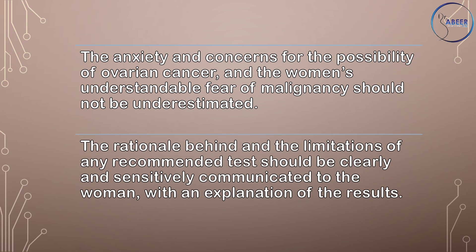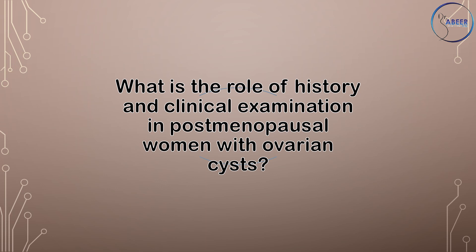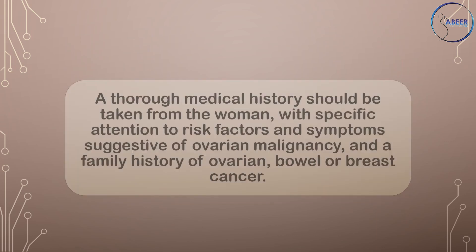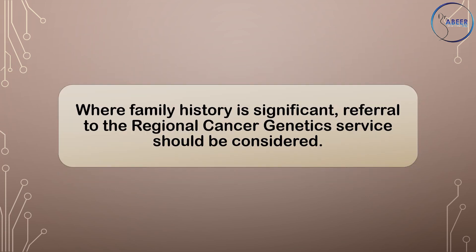The anxiety and women's understandable fear of malignancy should not be underestimated. The rationale behind and limitations of any recommended tests should be clearly and sensitively communicated, with an explanation of the results. Where the initial imaging modality was a CT scan, unless this clearly indicated ovarian malignancy and widespread intra-abdominal disease, an ultrasound scan should be obtained to calculate the Risk of Malignancy Index (RMI). A thorough medical history should be taken with specific attention to risk factors and symptoms suggestive of ovarian malignancy, and a family history of ovarian, bowel, or breast cancer. Where family history is significant, referral to the cancer genetics service should be considered.